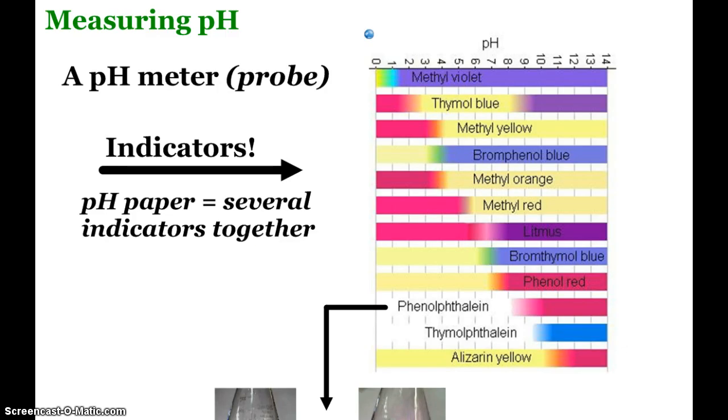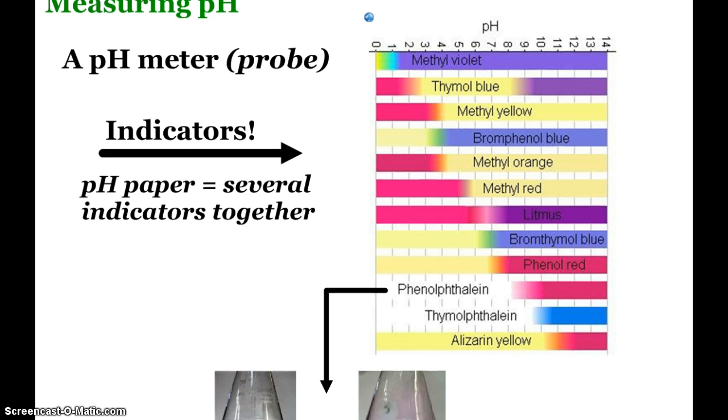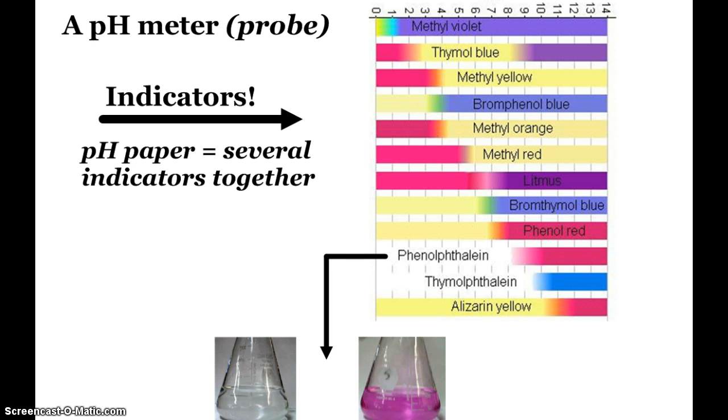How do we measure pH? Typically a pH meter or a probe. And hopefully we have some of those functioning, so we'll be doing some labs using those. But there's also these indicators that you may have heard of and seen, of course, like litmus paper turning blue or red. pH paper is a much more powerful indicator because it has several indicators linked together. Several indicators all on the same piece of paper, so it will give us an indication of a pH value between 0 and 14. As you can see here, a lot of the indicators only have one specific change of color.